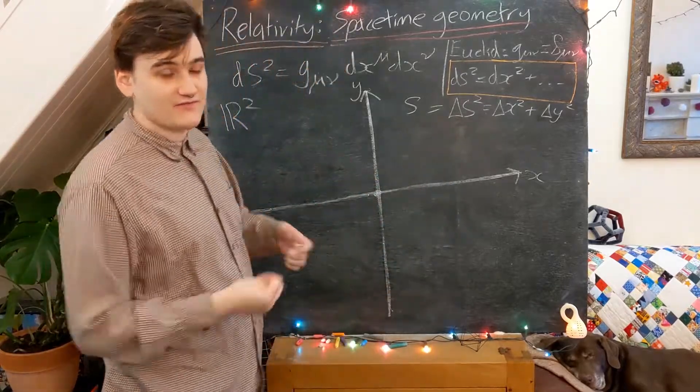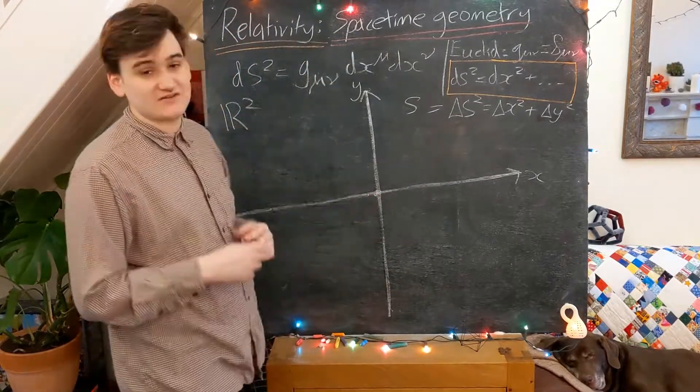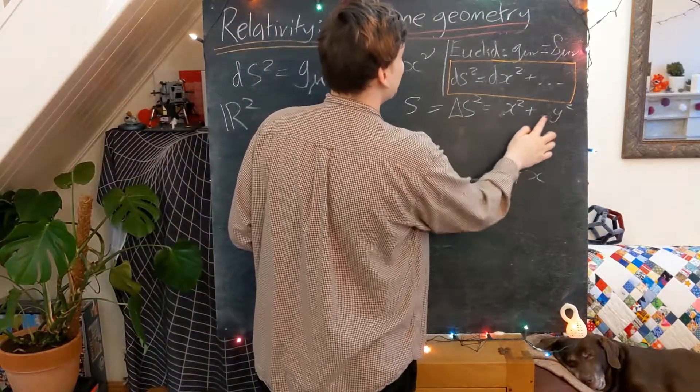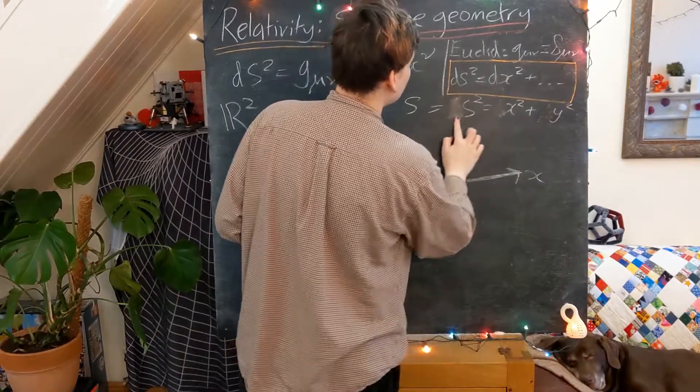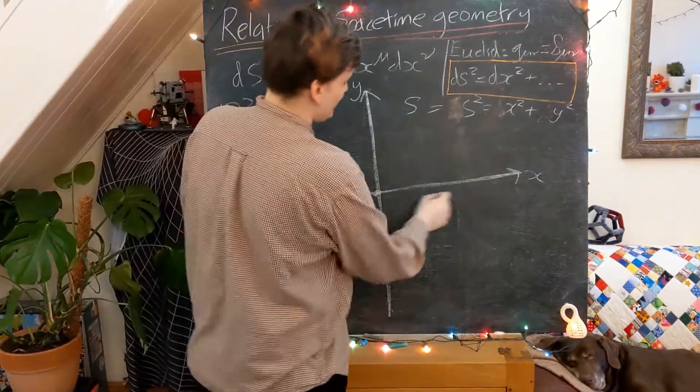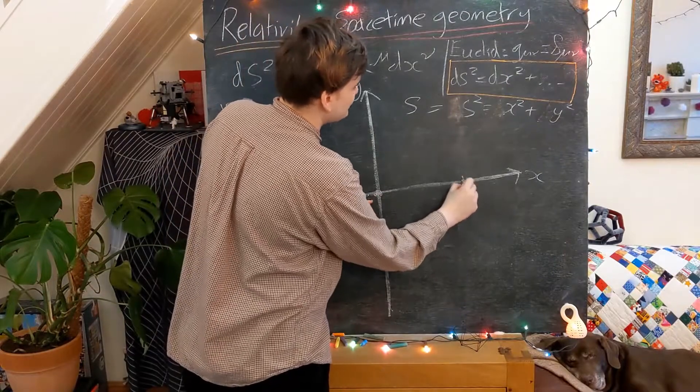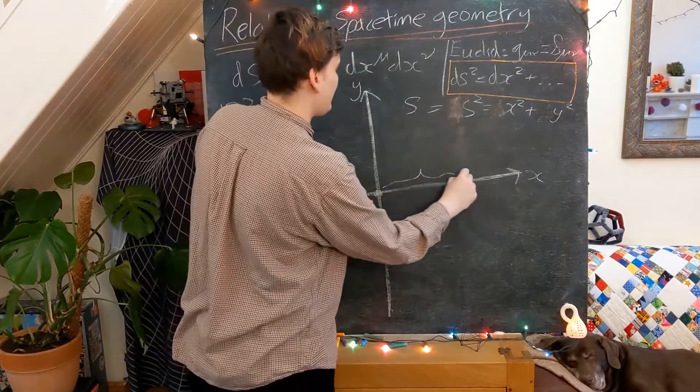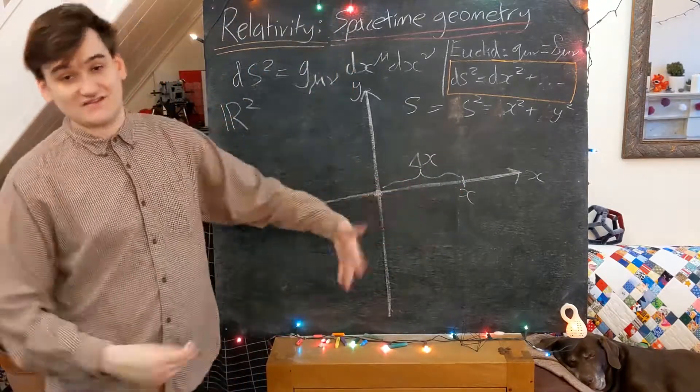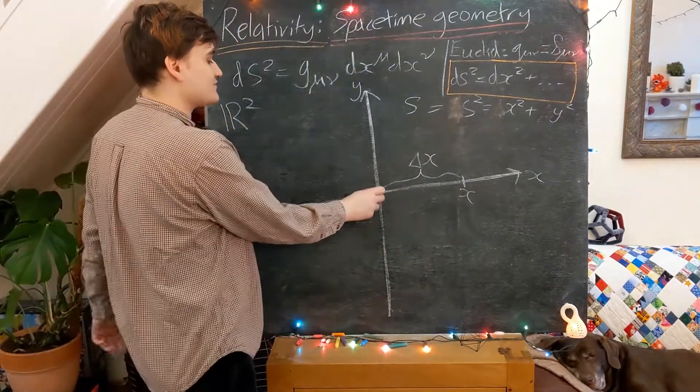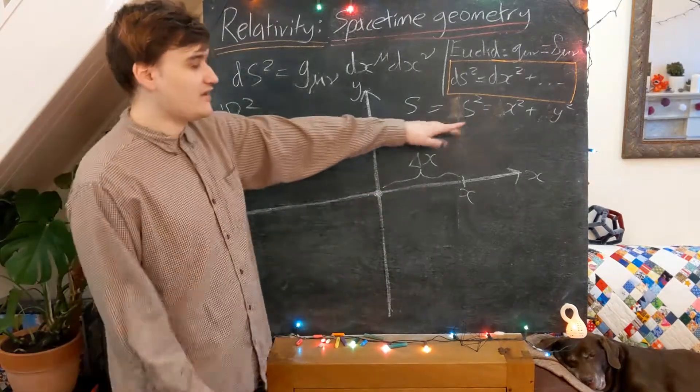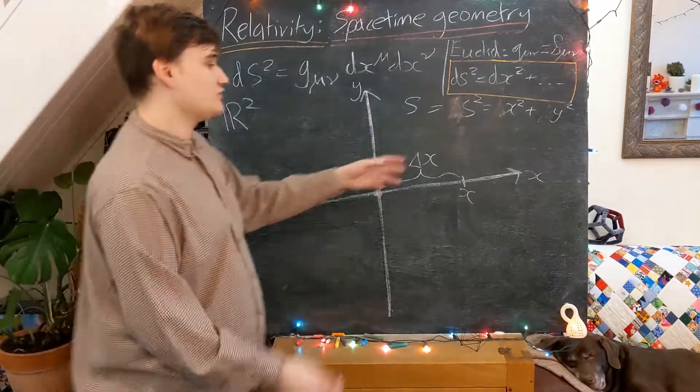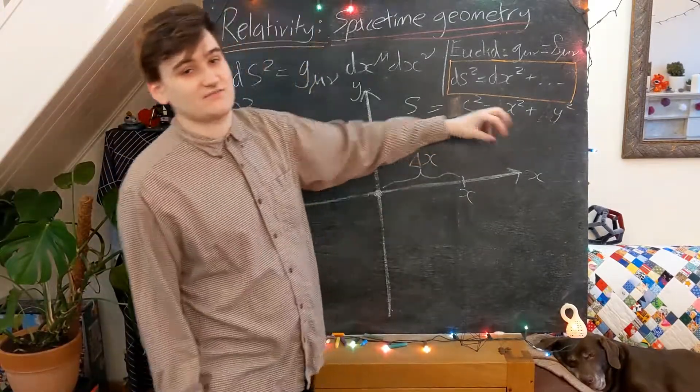Now the kind of convenient thing that measuring points from the origin does for us is it essentially allows us to get rid of this interval symbol. We can just consider essentially because the interval from the origin to a point x, this interval here is going to be delta x. Delta x is just x when we measure these intervals from the origin. We can now kind of conveniently talk about this line element interval just using a kind of function expression like this here.